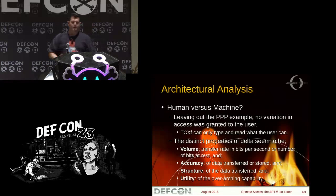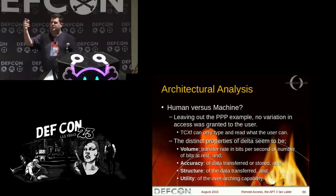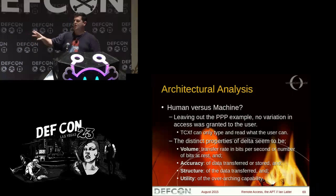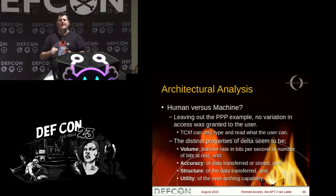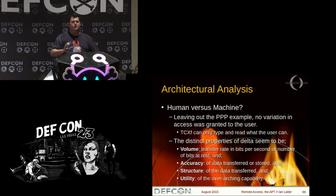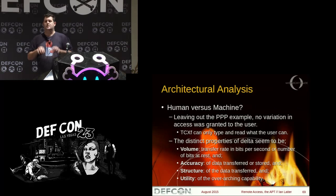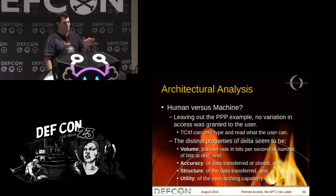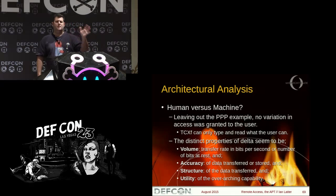On architecture: leave out the PPP example — it's not part of the solution because it requires privilege to set up an interface on a system. But before that, we already had a TCP socket working between two nodes. The important thing to note is the technologies I've shown you do nothing for privilege — they can only do exactly what your users can do today: what you can type and read is what I can type and read. The distinct properties of the delta seem to be along the lines of volume, accuracy, structure, and utility — the paper goes into a few views on that and the cat-and-mouse games you could play.